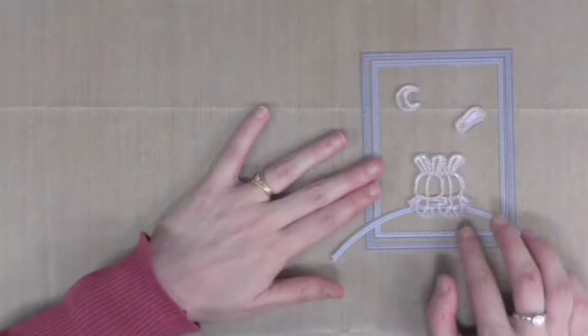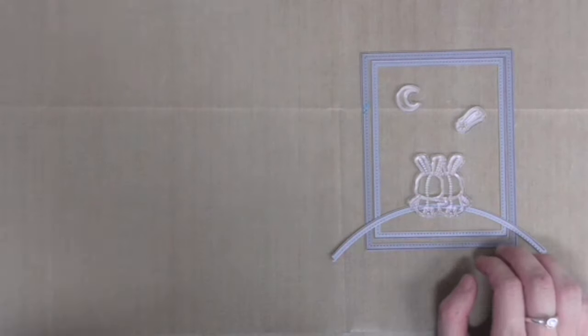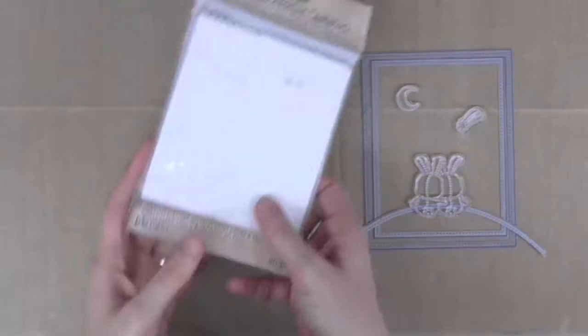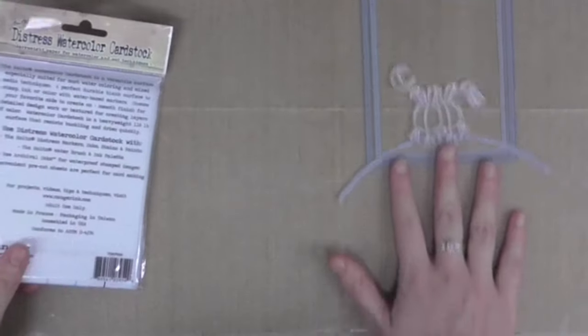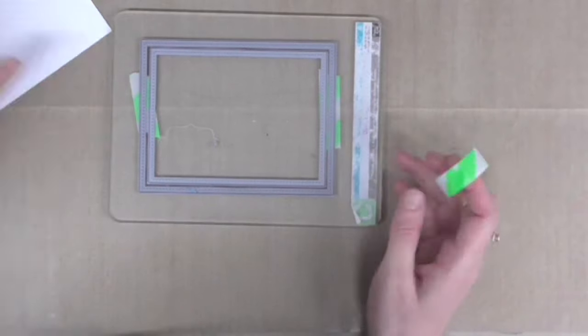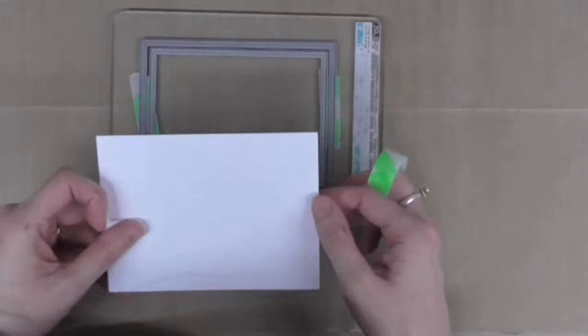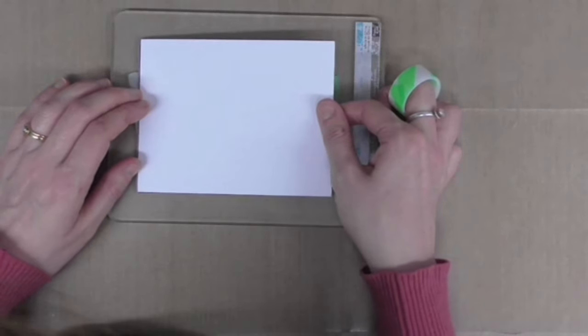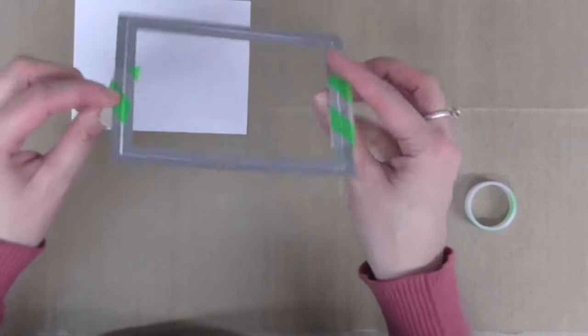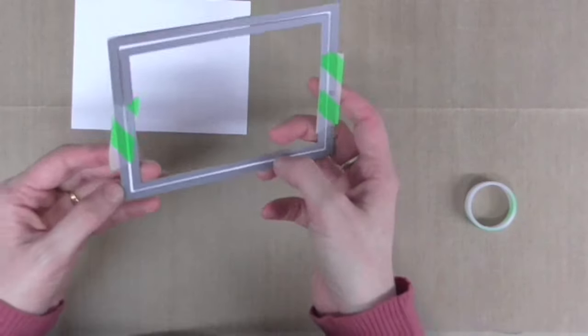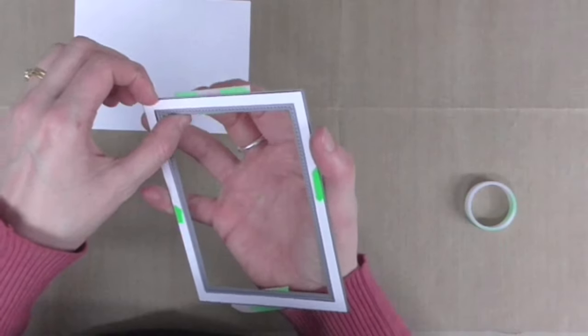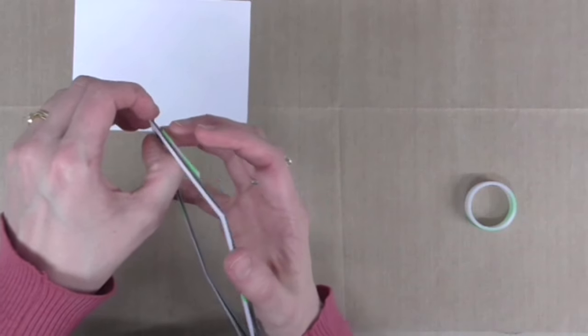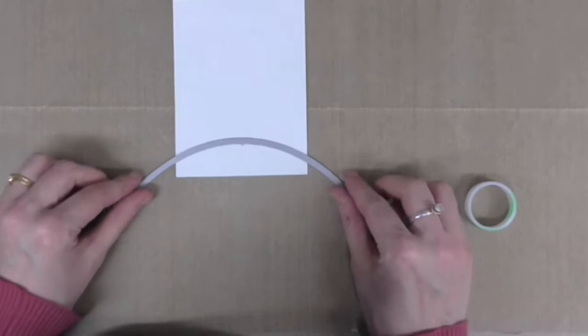For today's card, I'm going to be doing quite a bit of distress ink coloring, so I'm starting off with some distress watercolor cardstock. First of all, I'm going to cut out a frame using the large and small stitch rectangle dies from Lawn Fawn. I'm going to take this inside panel and keep the frame to use later on.